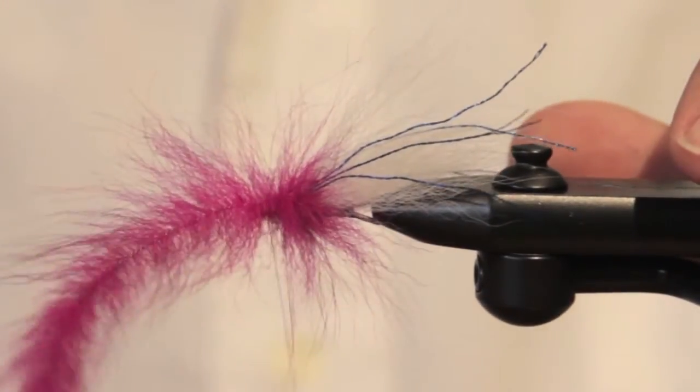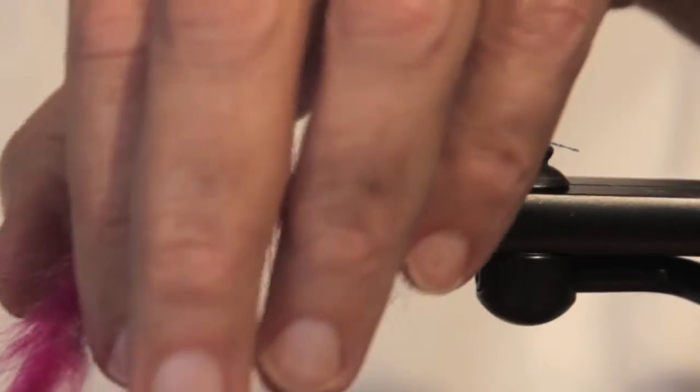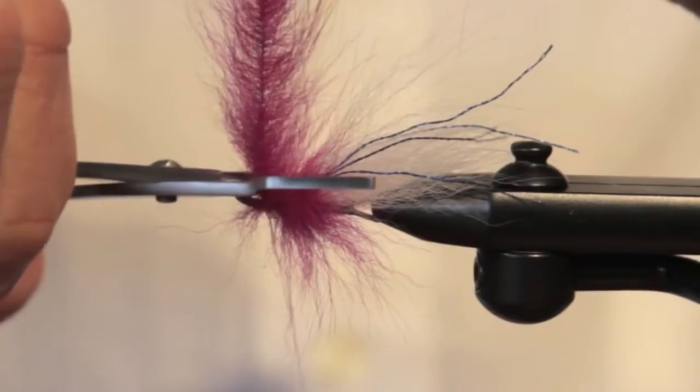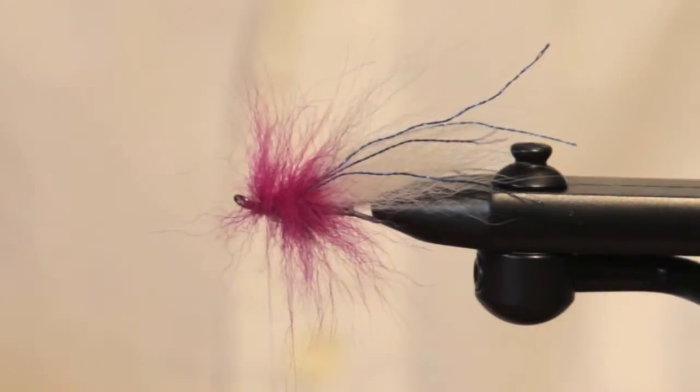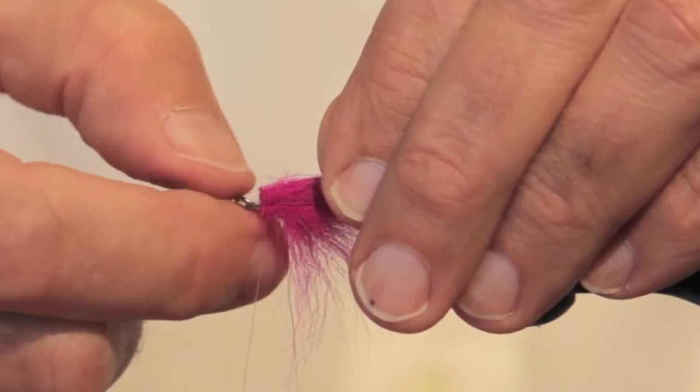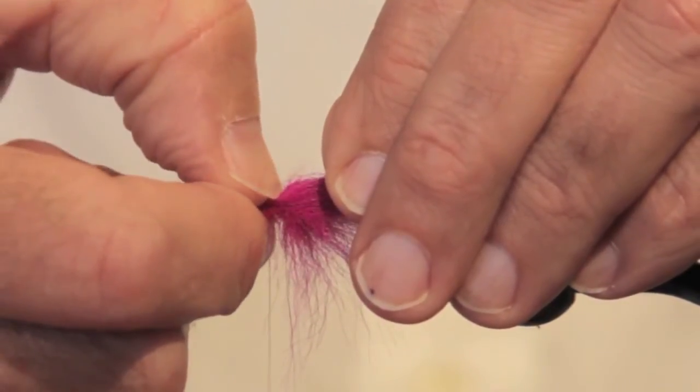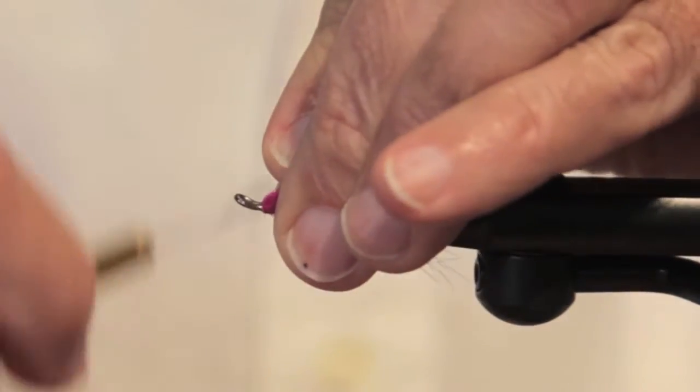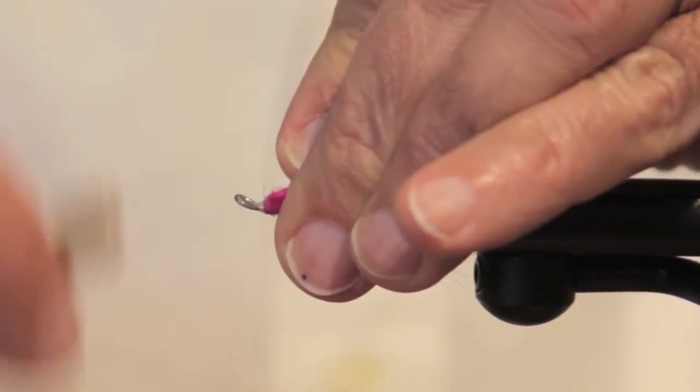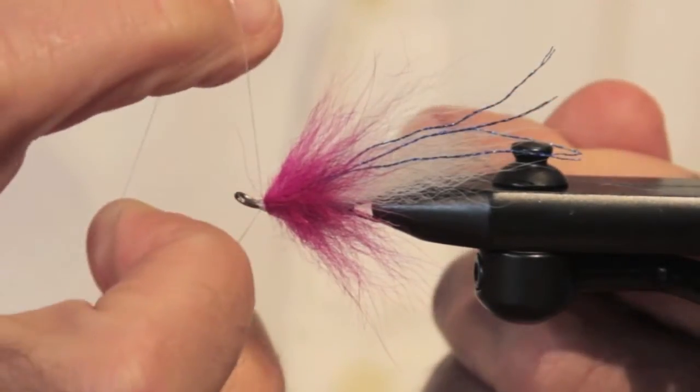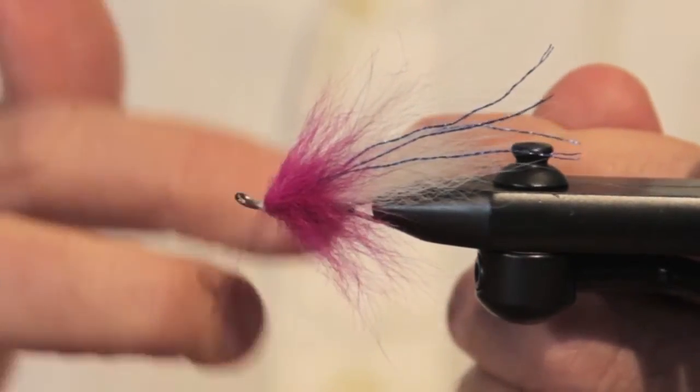To finish it off, you wind over it about three times, then you reach for your Dr. Slick barb cramping pliers, not your scissors. And there's a sharp wire sticking up right there. I'm going to press that back with my thumb, finish off in front. There we go, method number one, the EP Foxy brush.